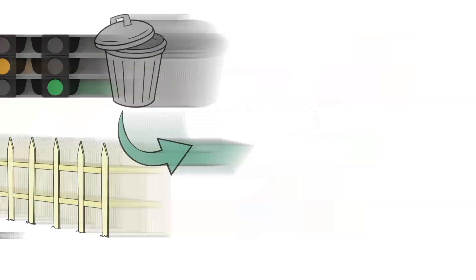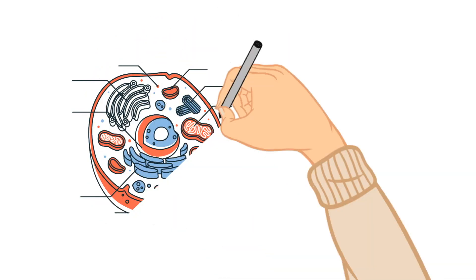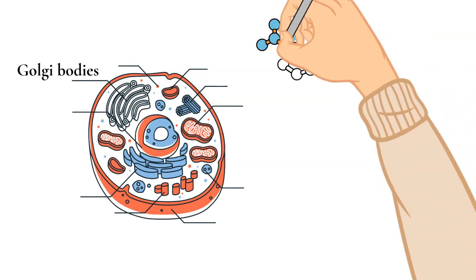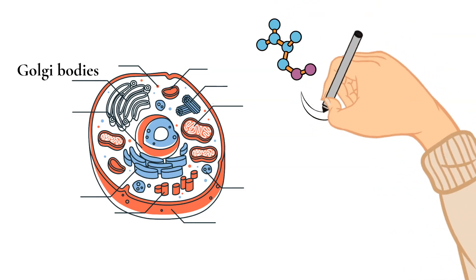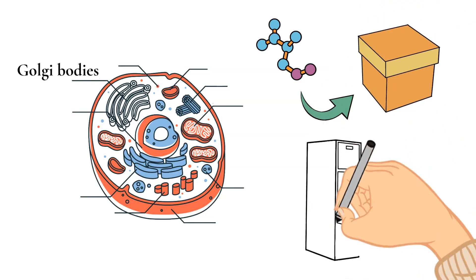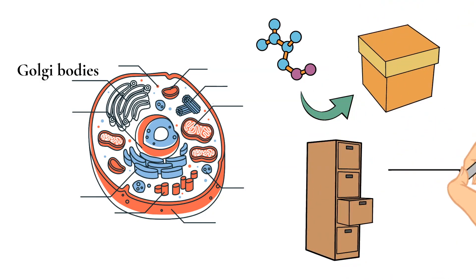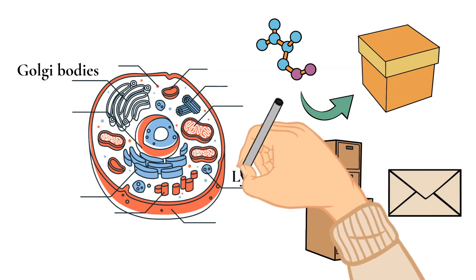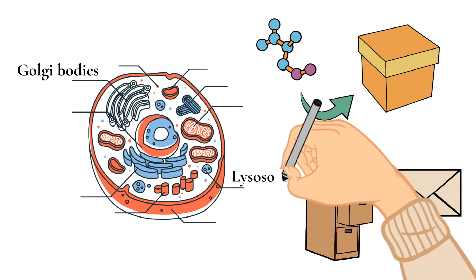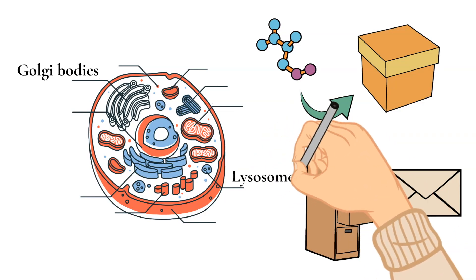And last, we are going to talk about the Golgi bodies. The Golgi bodies takes in protein and modifies it and then places it in shipping containers called vesicles and stores them for later use or can also send them out of the cell. Another thing that the Golgi apparatus does is it can make these organelles called lysosomes which contain digestive enzymes.